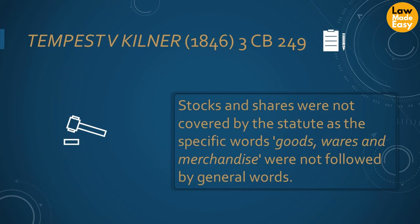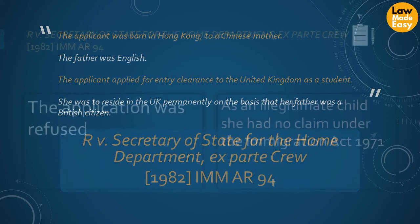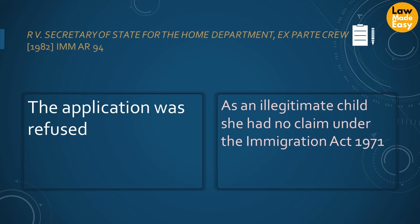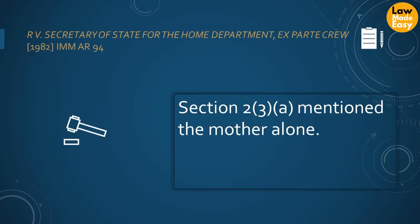Application of this rule can be found in the relatively recent case of R against Secretary of State for the Home Department. In this case, the rule was used to exclude the father of an illegitimate child from rights under the relevant immigration laws. The applicant was born in Hong Kong to a Chinese mother; the father was English. The applicant applied for entry clearance to the United Kingdom as a student, intending to reside in the UK permanently on the basis that her father was a British citizen. The application was refused on the ground that as an illegitimate child, she had no claim under the Immigration Act 1971. The word 'parent' within the meaning of Section 23A of the Immigration Act 1971 did not include the father of an illegitimate child. The court held that the definitions section mentioned the mother alone.